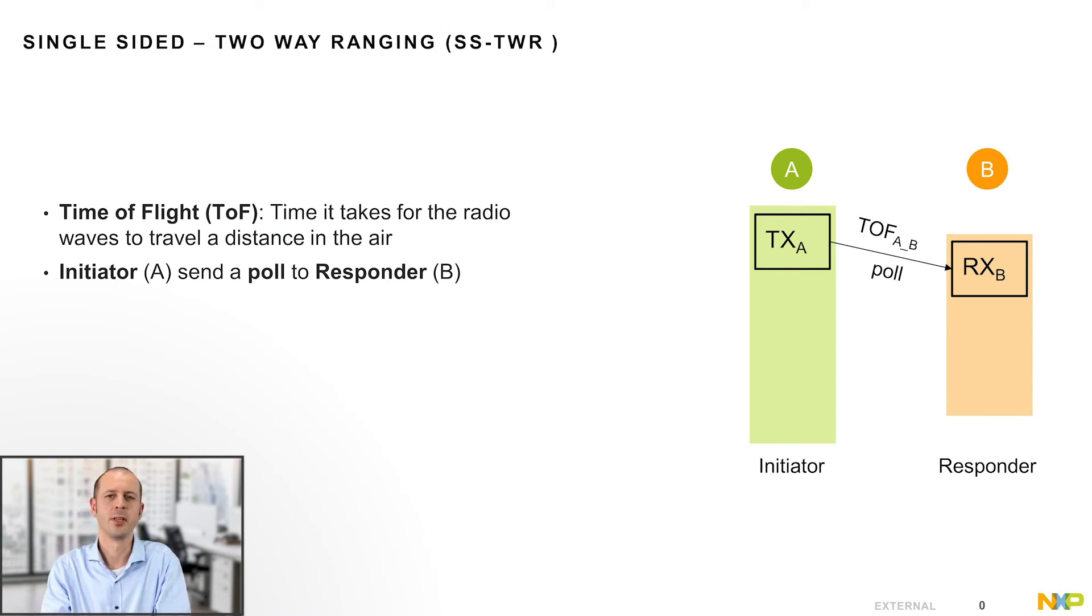Time of flight is a measurement of the time it takes for the radio waves to travel a distance in the air. The initiator A sends a poll message to the responder B. The time needed by the poll to cross the distance between A and B is the time of flight, which equals the distance divided by the speed of light.